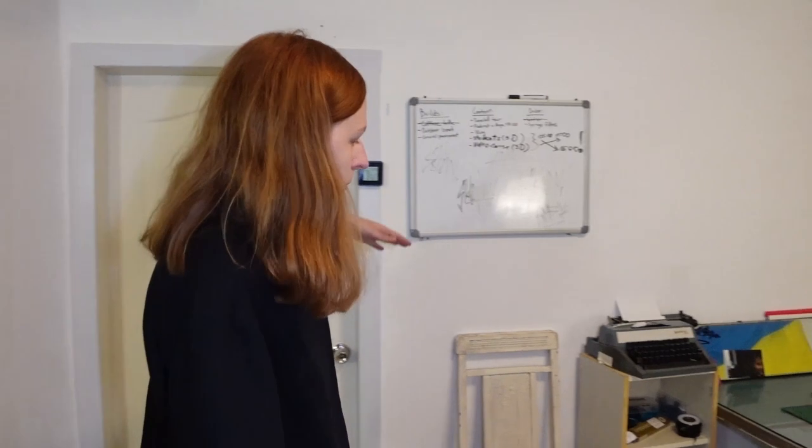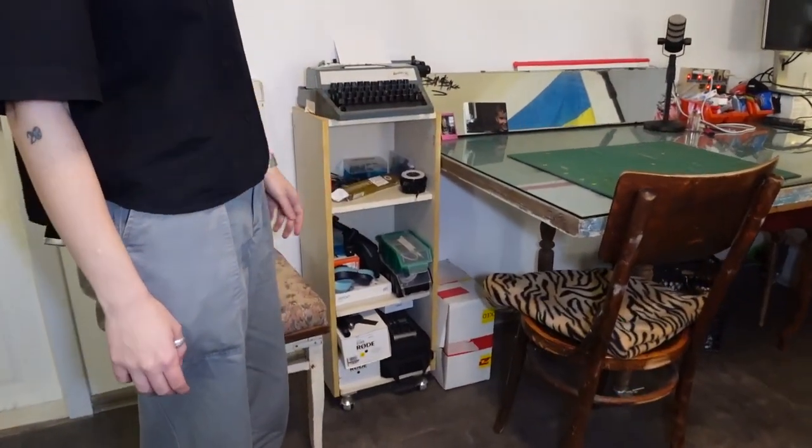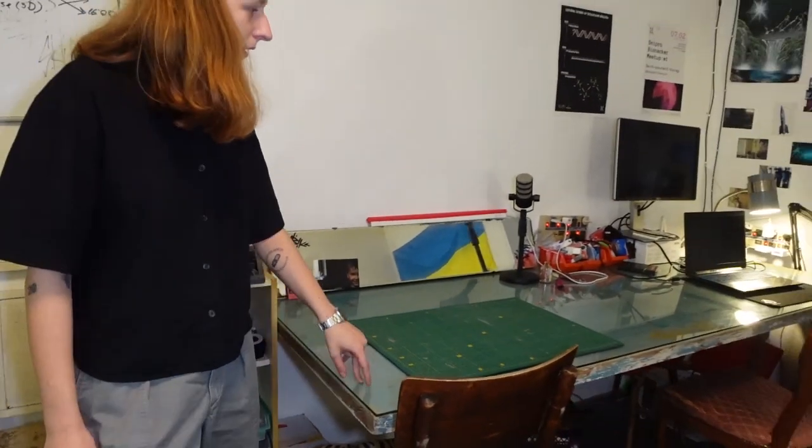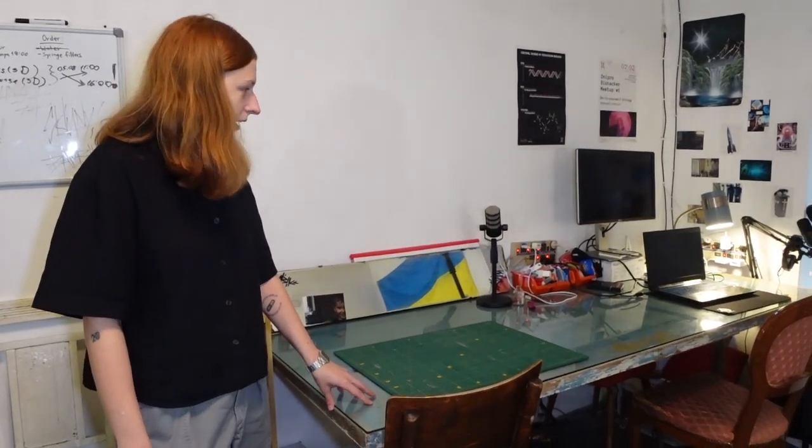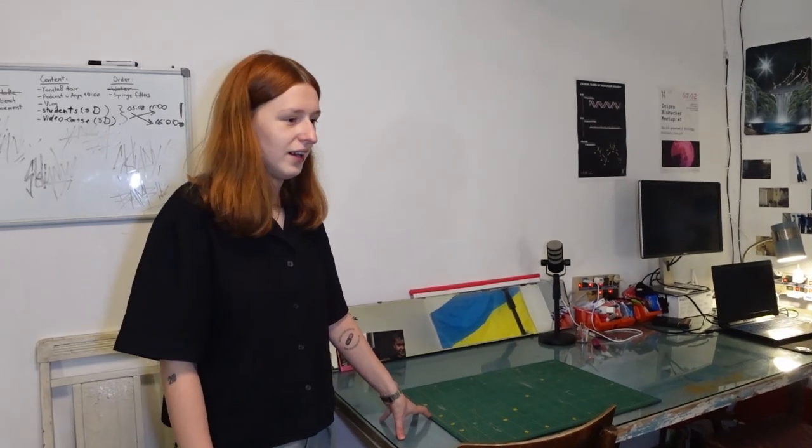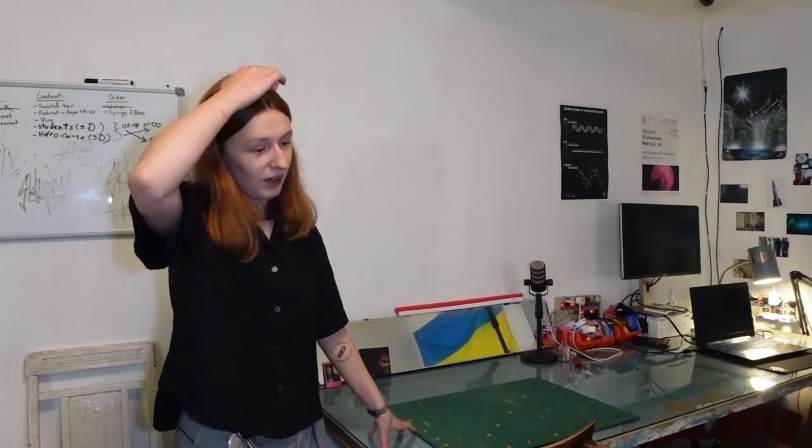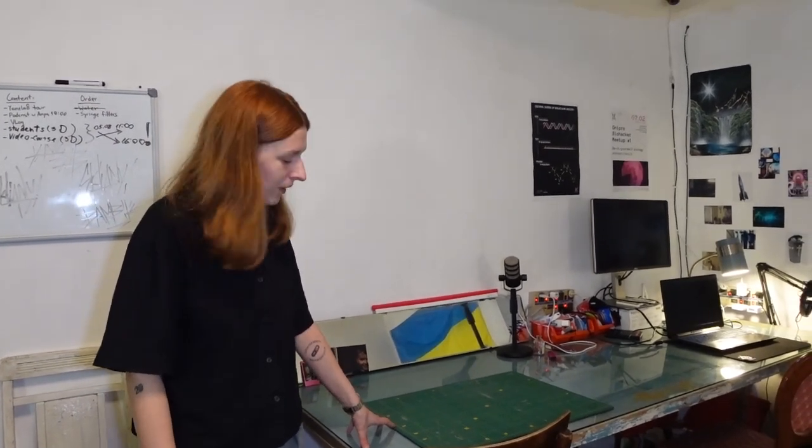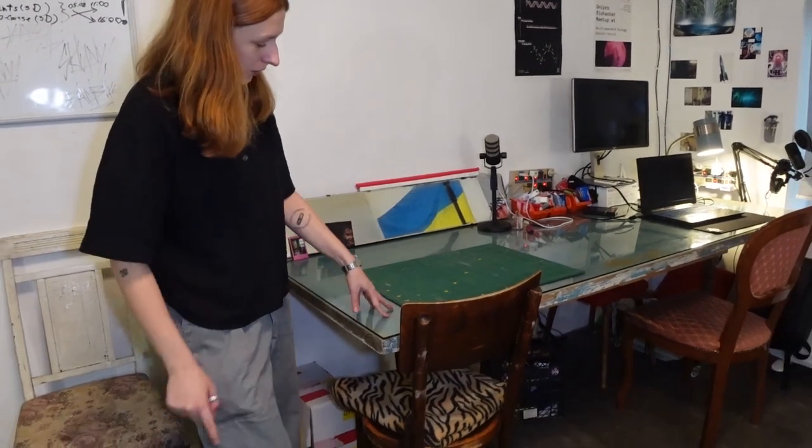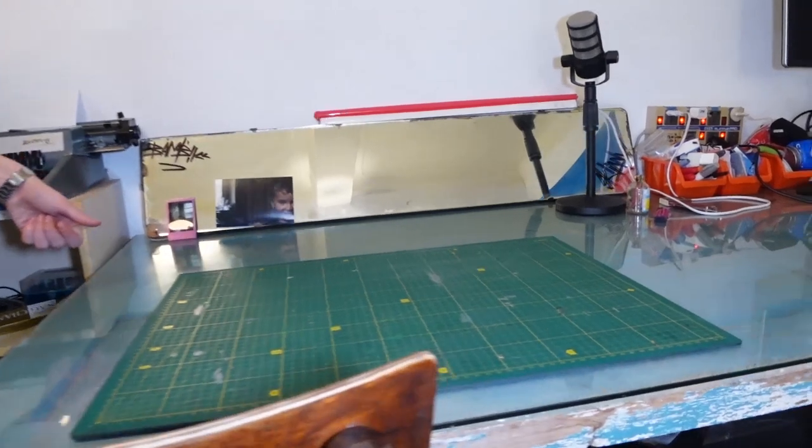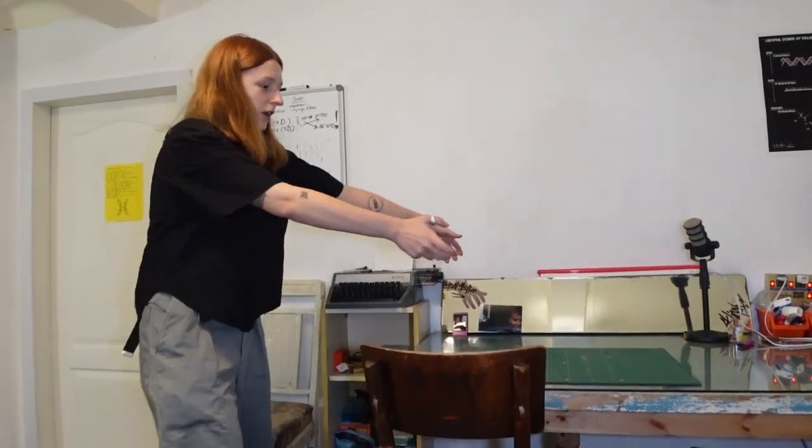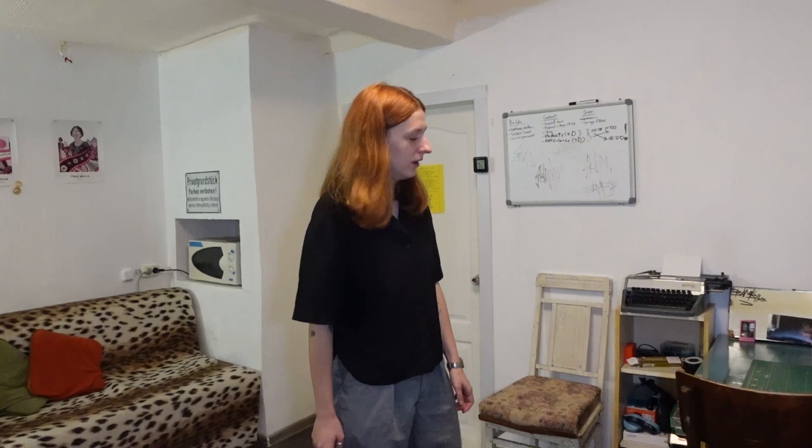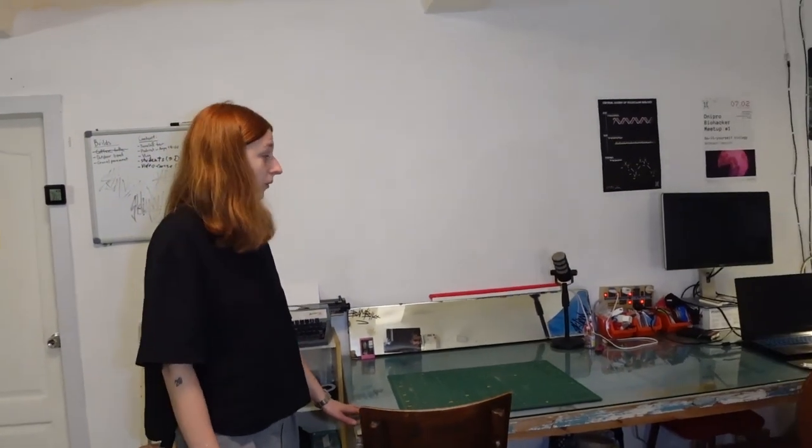Here we have whiteboards, some equipment for podcasts, for video and stuff. This is a table I made from a door. I had this door laying in my garage at my parents' place and I didn't have any money when I was doing the lab so I would just make stuff all the time. I got glass, put it on top, put some legs and wheels, and if you need to you can slide this table out. Because it's glass it's really easy to clean if you spill any bacteria or chemicals.